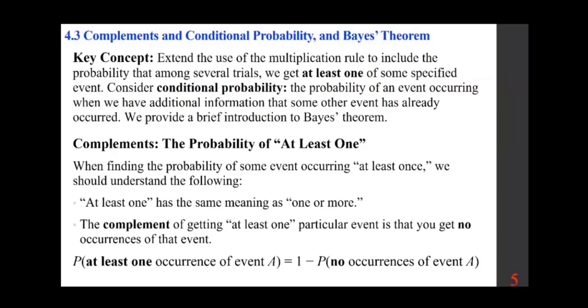Complements: the probability of at least one. When finding the probability of some event occurring at least once, you should understand the following: at least one has the same meaning as one or more. The complement of getting at least one particular event is that you get no occurrences of that event. P(at least one occurrence of event A) equals 1 minus P(no occurrences of event A).